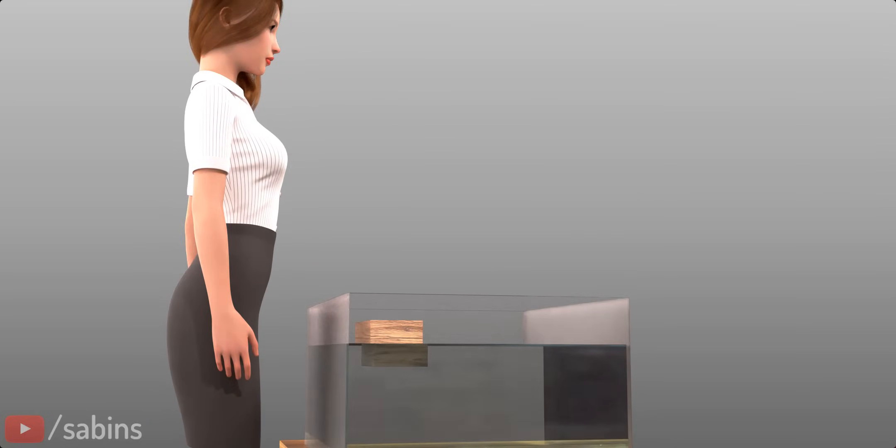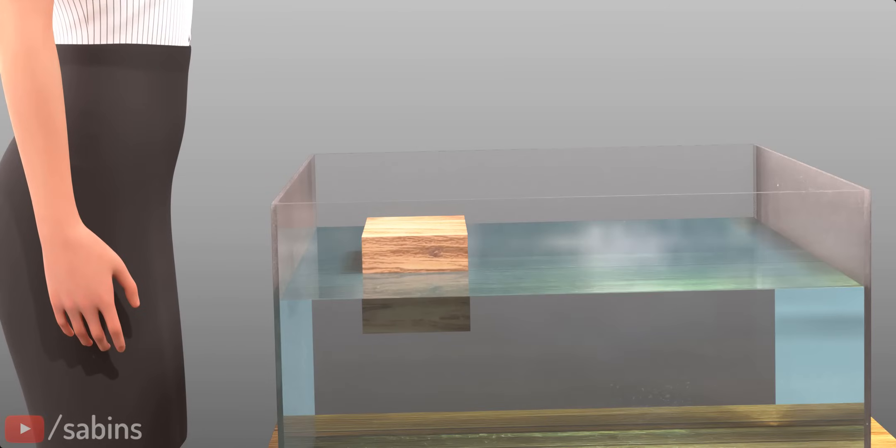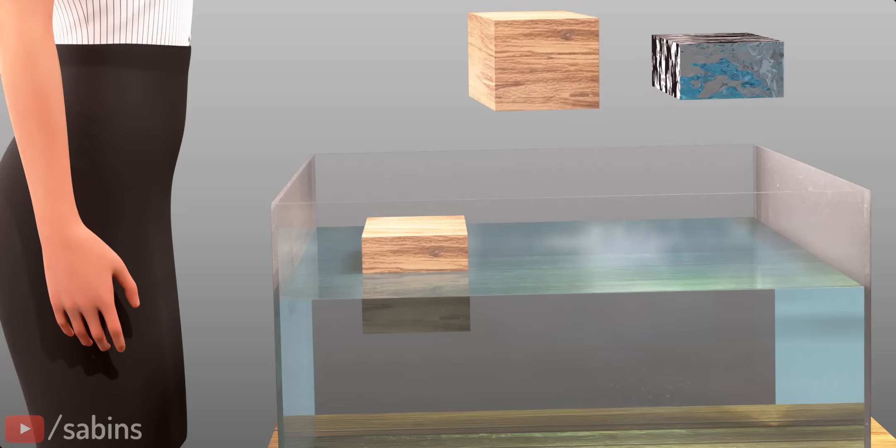Now, let's analyze the block in its equilibrium position. At the equilibrium position, the block displaces a much smaller volume of water. Here, if you check the weight of the displaced water, it will be the same as the weight of the block. In short, at the equilibrium position, the buoyancy force and the weight of the block balances.